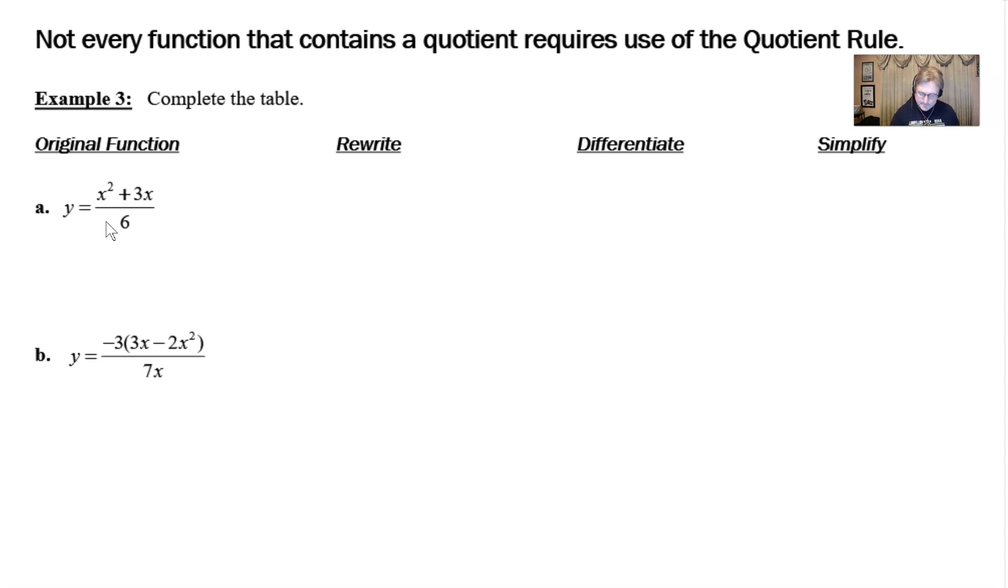So if we look at problem A, yes, we have a quotient, and of course we could use the quotient rule, but I sometimes say it's kind of like putting a match out using a fire hose. It's a little bit overkill. So what we can do is recognize the fact that there is a single monomial term in the denominator, six. That's all we need to know to avoid using the quotient rule.